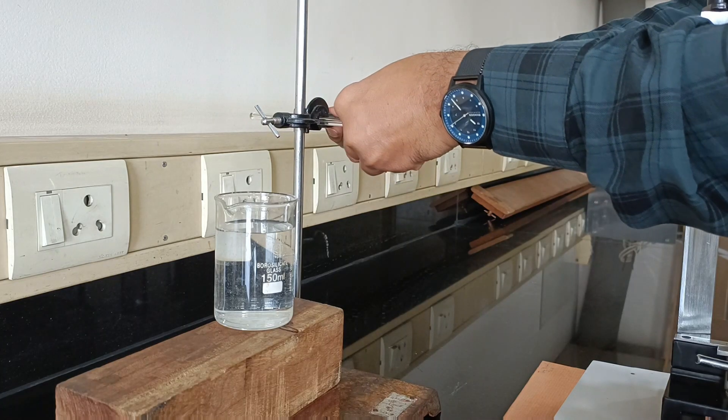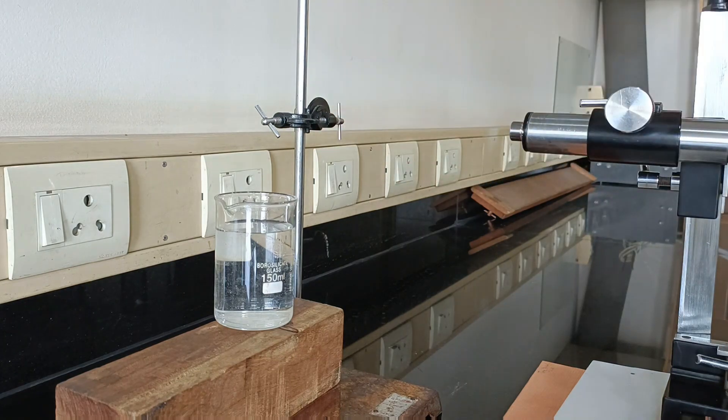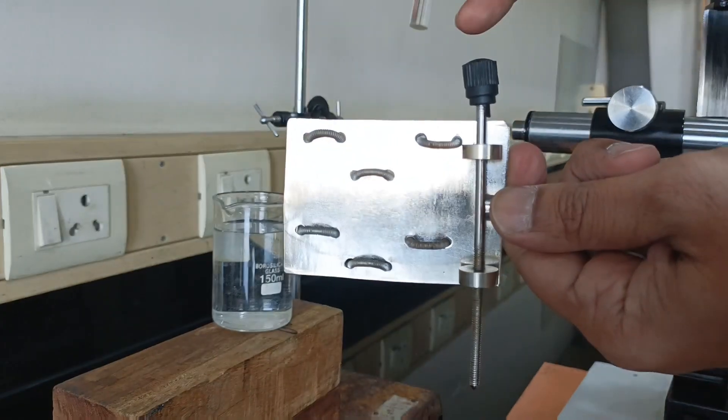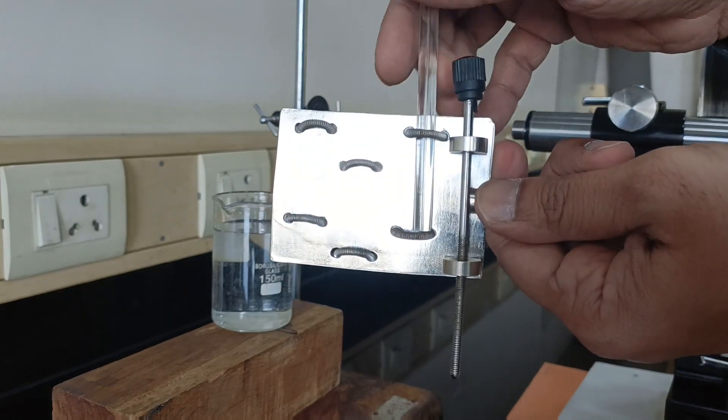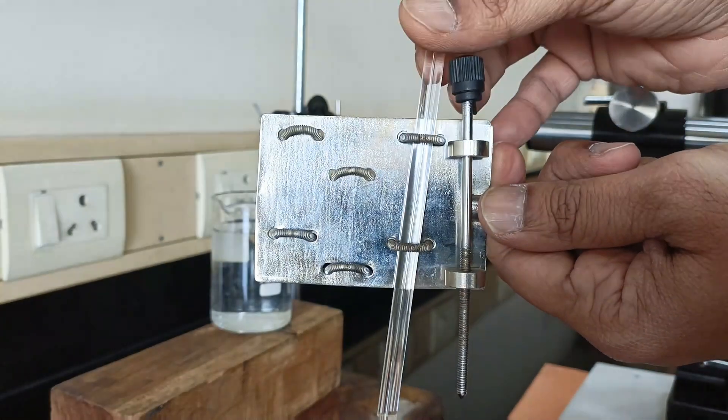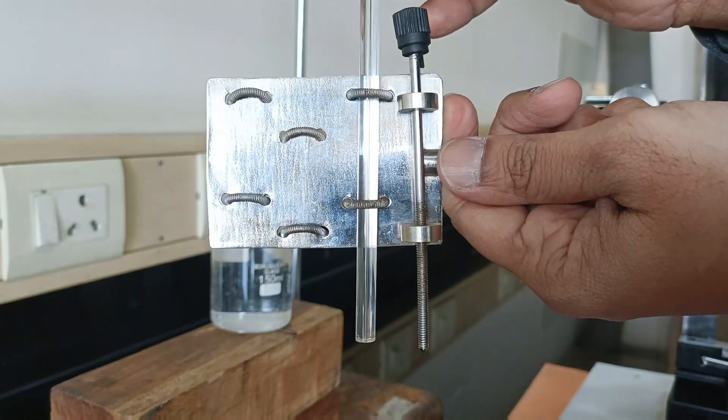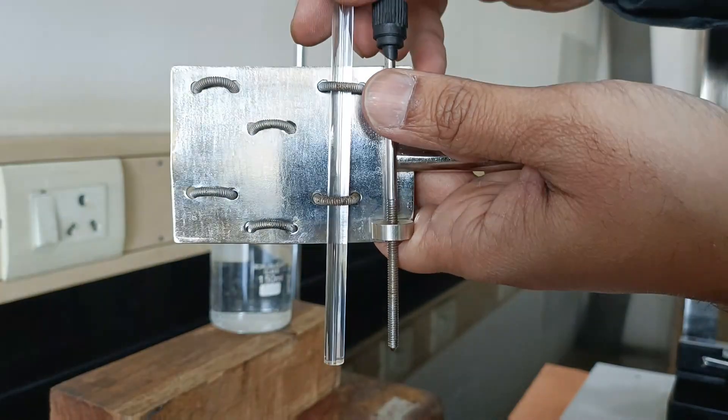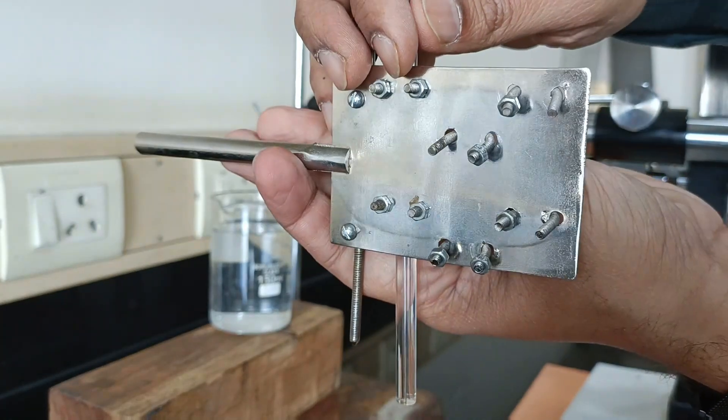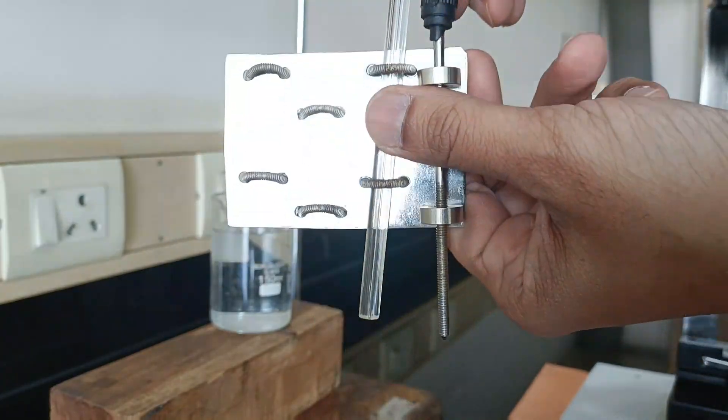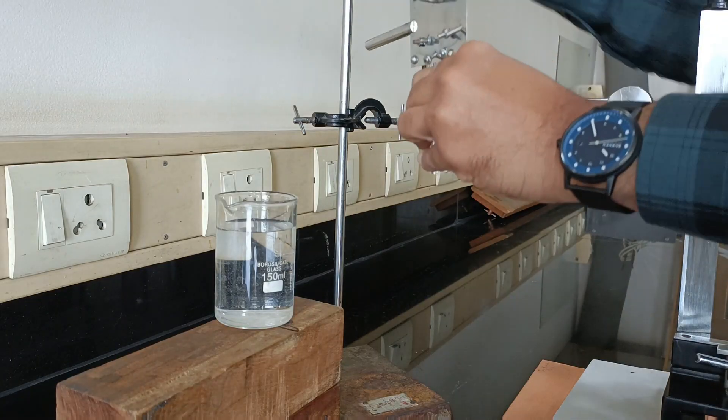Let's remove the capillary from the stand and insert it into this holder. Tighten the capillary using the screws on the back side of the holder. Fix the holder to the stand as shown.